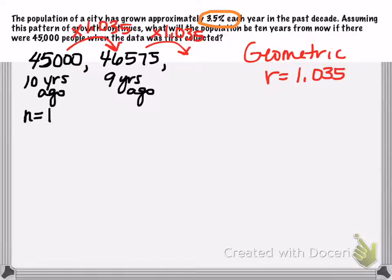And 46,575, then that would be my population basically 9 years ago and so on. So while we're going to call this my first term, n equals 1 and n equals 2, we do need to be cognizant of the fact that this is not the current population, but this was the population 10 years ago.